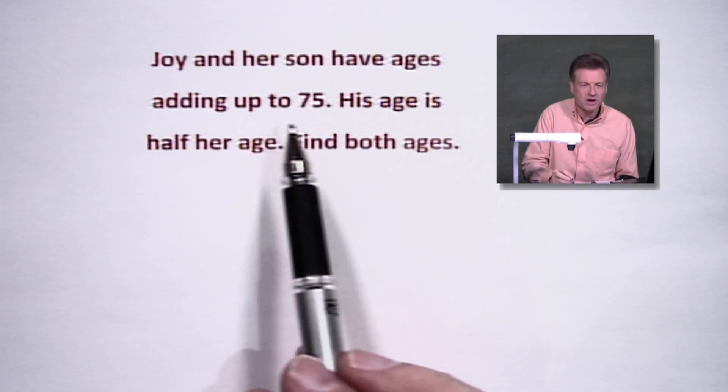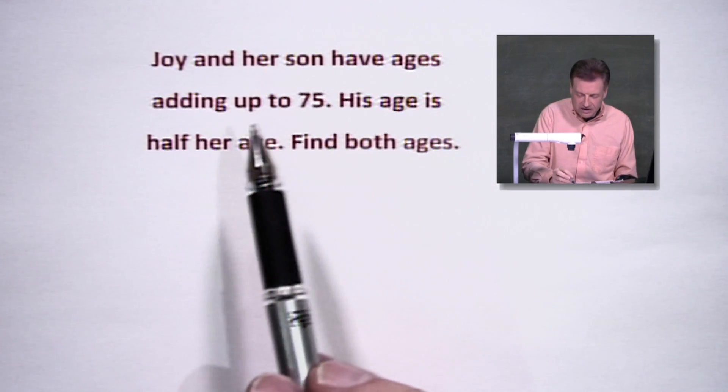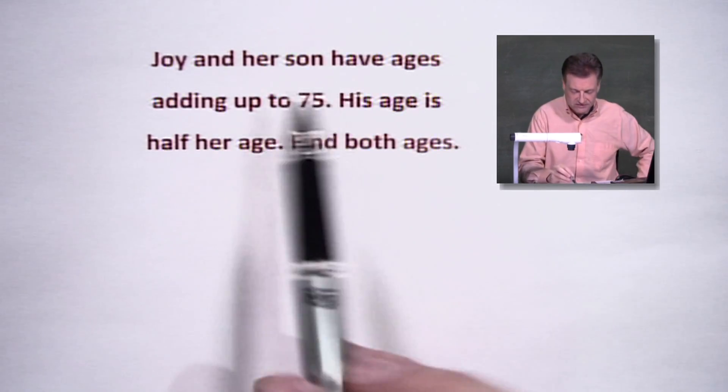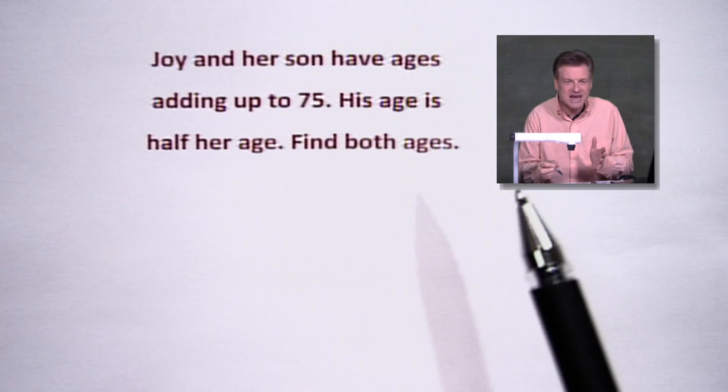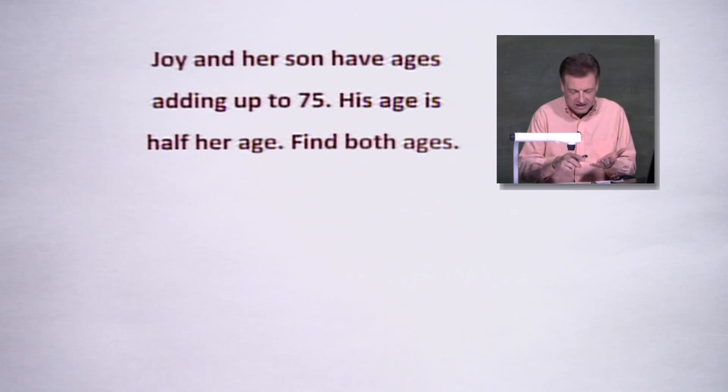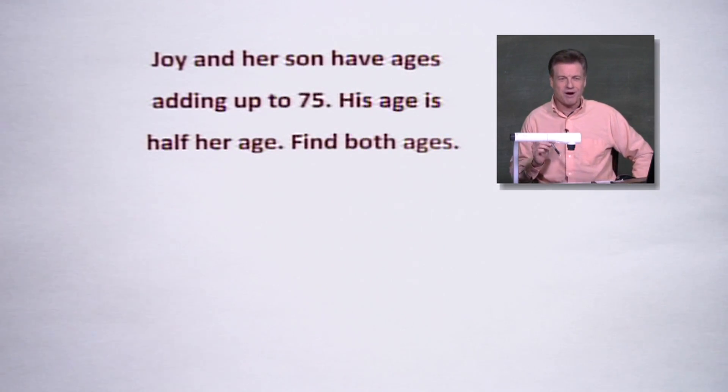There are two clues going on here, important clues, and if you just go with one of them, you've got a lot of options. In other words, if I just said Joy and her son have ages adding up to 75, my goodness, we could have 40 and 30. We could have 37 and 38. It could be very close, but I don't think it would make much sense because that's Joy and her son. That wouldn't be one year apart. That'd be a little weird.